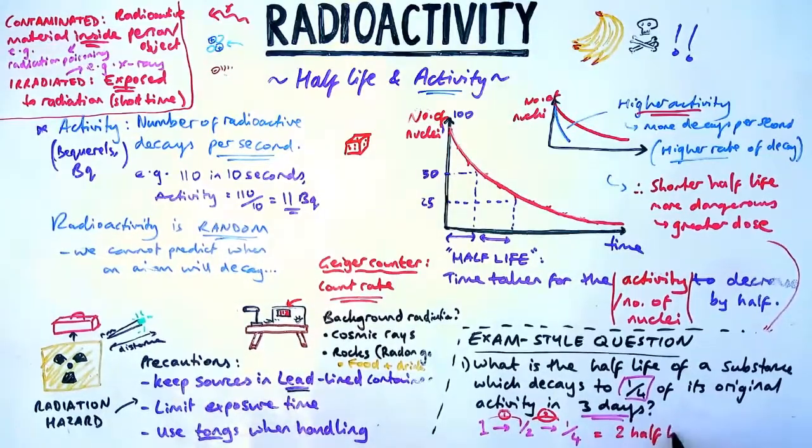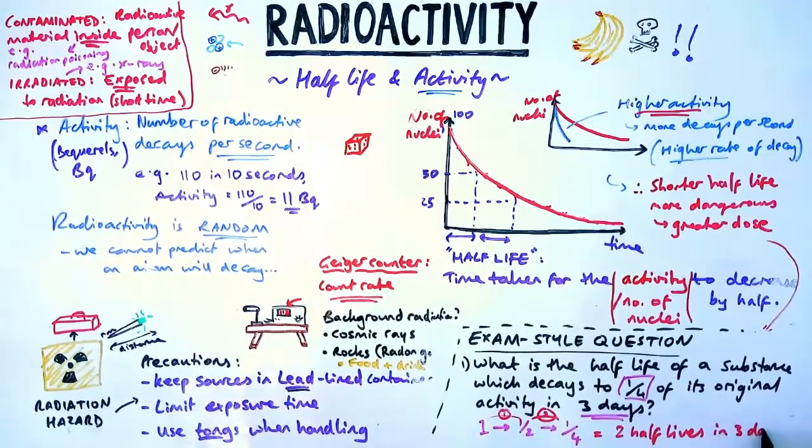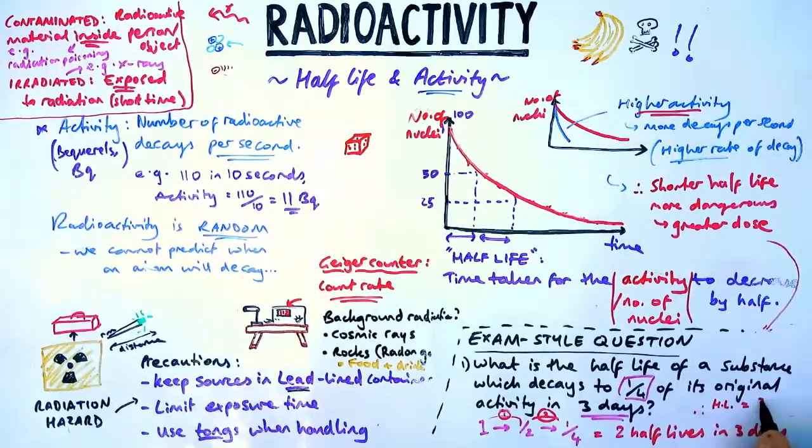So in those three days, that means we have halved twice. So therefore two half-lives in three days, one half-life is going to be 1.5 days.